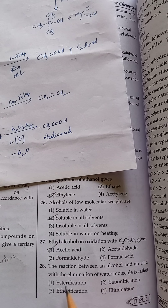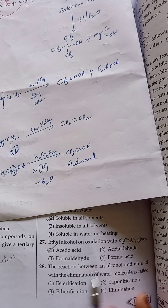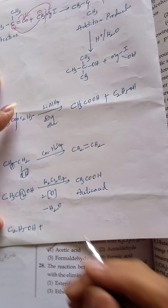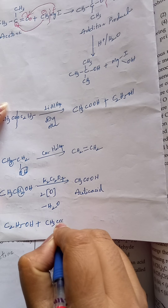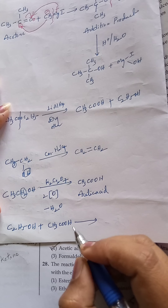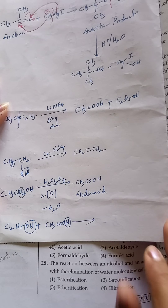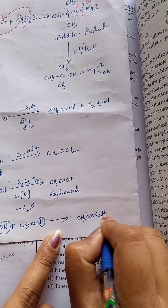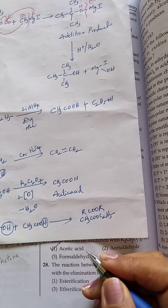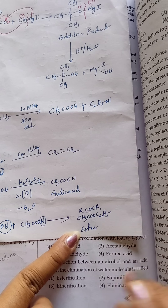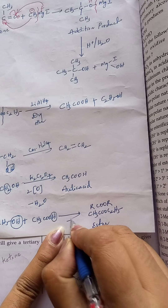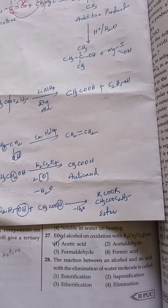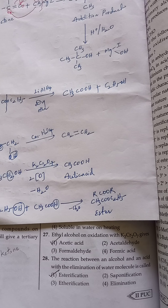The reaction between alcohol and acid with elimination of water is called what? Taking ethyl alcohol C2H5OH plus acetic acid CH3COOH: OH from alcohol and H from acid eliminate as water. The CH3COO part joins with C2H5 giving CH3COOC2H5, which is in the form of RCOOR — known as an ester. The process of formation of ester by removal of water from acid and alcohol is known as esterification reaction.